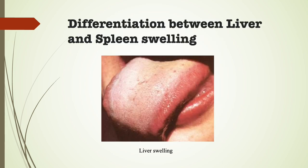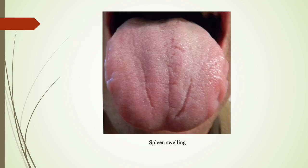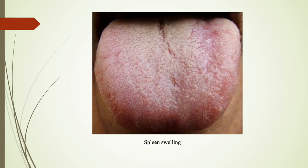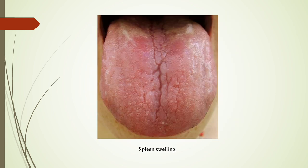The following tongue images will help us differentiate between liver and spleen swelling. This is liver swelling — as you can see, there's swelling on the sides of the tongue. And this is spleen swelling — there's a thickening in the central middle third of the tongue. Here are further examples of spleen swelling.